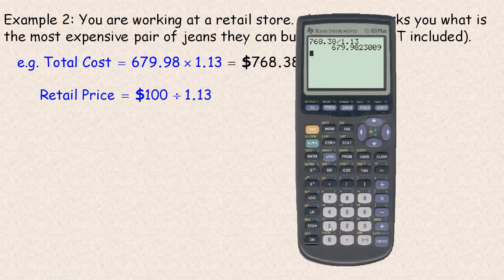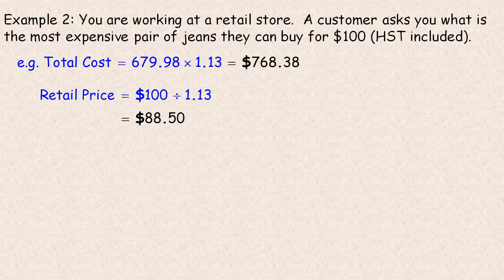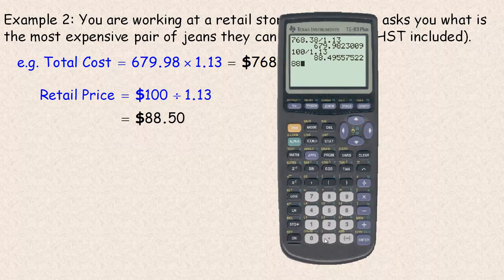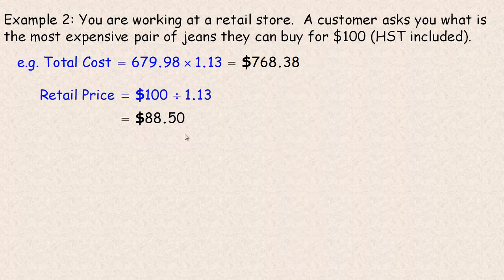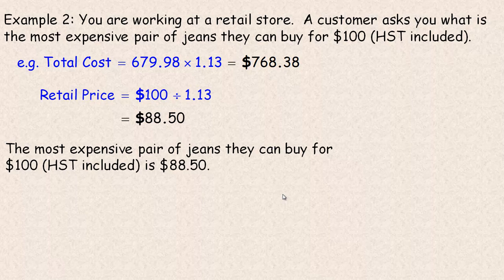100 divided by 1.13 — and again this is money, so we look two decimal places. The next decimal is a 5, so we round the 49 cents up to 50, giving us $88.50. If they find a pair of jeans for at most $88.50, their $100 will cover it. You can check that: 88.50 times 1.13 gives us $100. This would actually round to $100.01, but if paying cash, they won't ask for a penny since there are no more pennies, so it rounds to $100. The most expensive pair of jeans they can buy for $100 tax included would be $88.50.